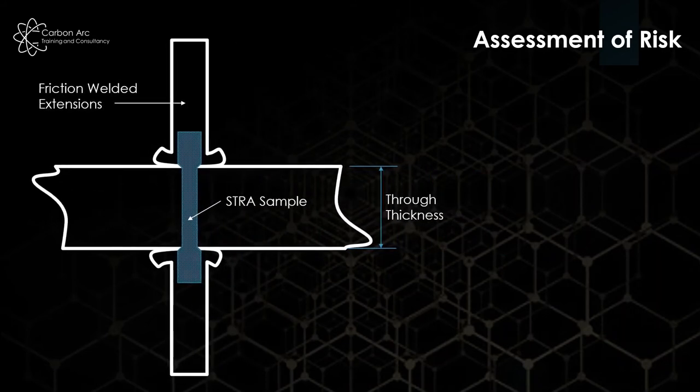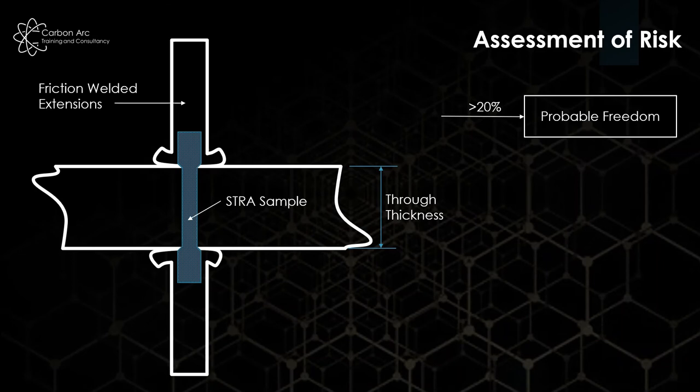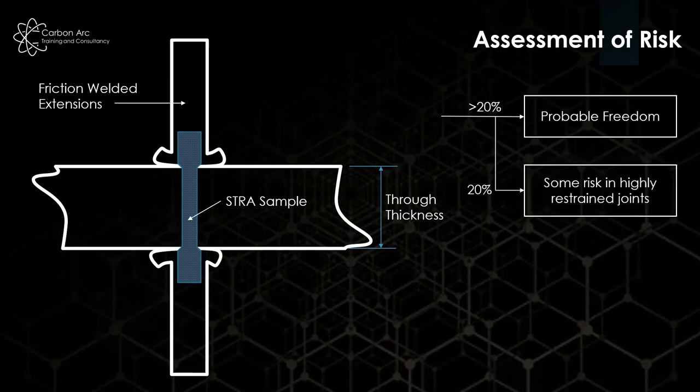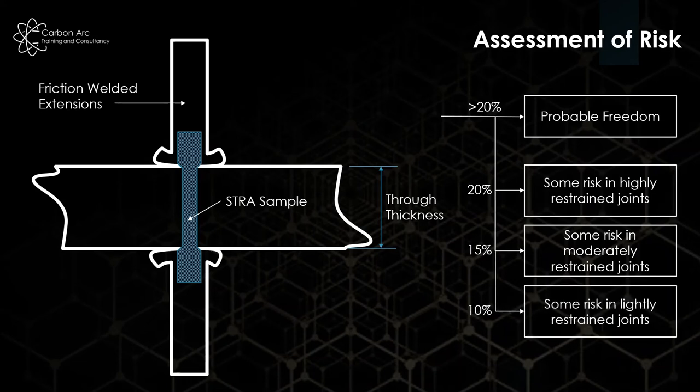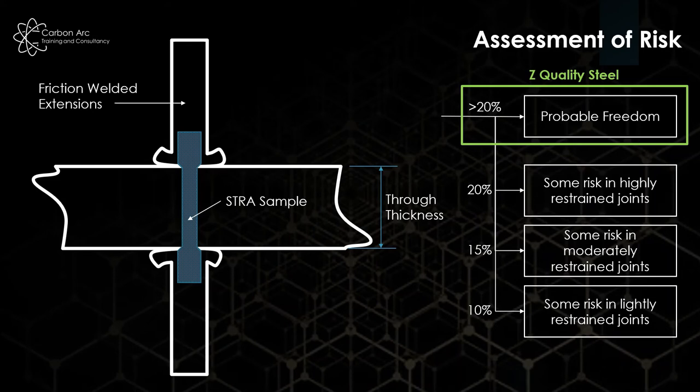From that we'll get a few different results. So anything above 20% means we've got probable freedom from laminar tearing. Our material should be good for most things. When we get to the 20% mark, we start hitting some risk in highly restrained joints, and then down to 15% is some risk in moderately restrained joints. And then 10% is, okay, even if you lightly restrain it, you're very possibly going to have this failure mode. But anything above 20%, that's good. That's what we call Z quality steel, and that's normally where we want to be. That removes this worry.